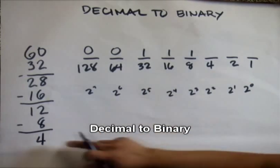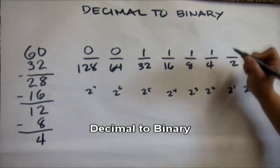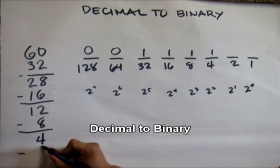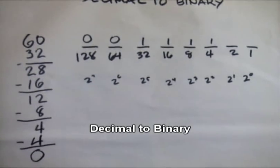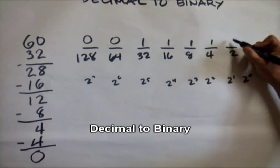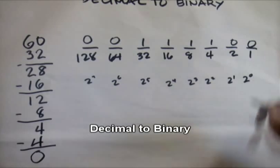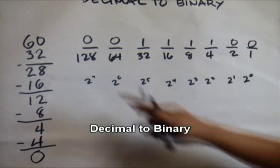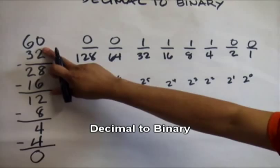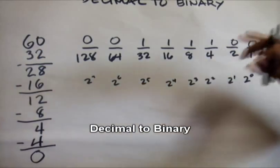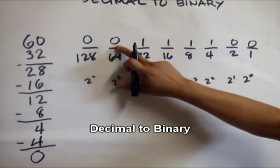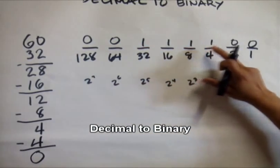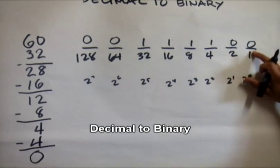Can 4 fit in 4? Yes, so we put one. We deduct 4, which equals zero. Next is zero, zero. Now 60 is converted to binary, which is 00111100.